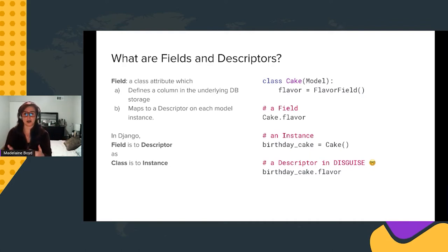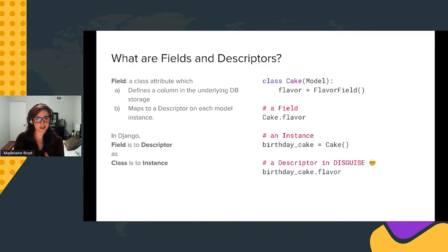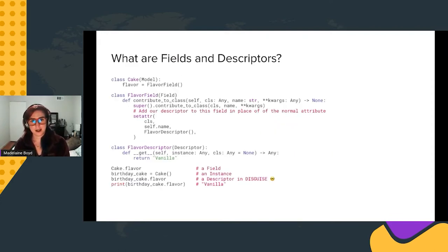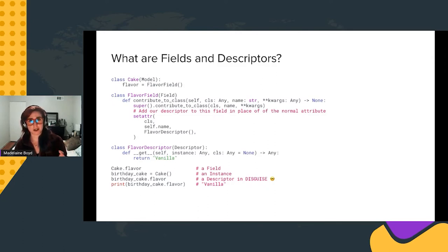Here is an example of how it's used in Django. We have a flavor field, and if you call cake.flavor it returns the flavor field. When you take an instance and call birthday_cake.flavor, this is actually a descriptor returning the value of whatever that flavor is. You can think of it as: a field maps to a descriptor in the same way a class maps to an instance. To override fields and descriptors in Django, you override the field and use a method called contribute_to_class to get our custom descriptor onto the model instance object, and that's where we add our permission checks.